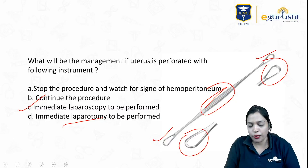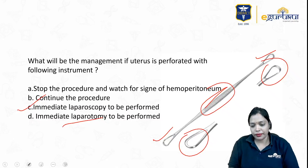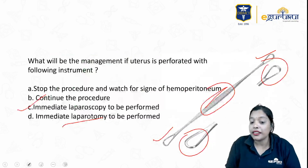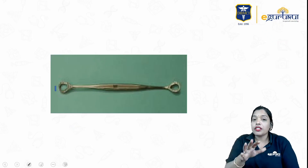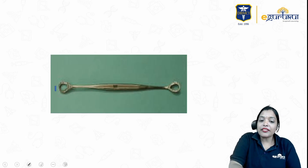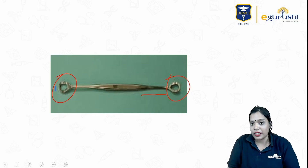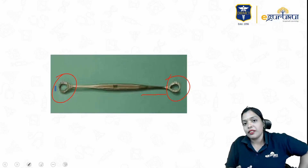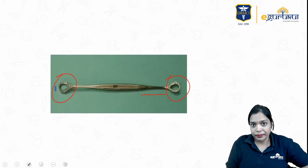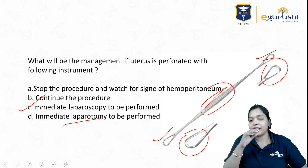You can always choose laparoscopy over laparotomy; go for laparotomy only when the patient is hemodynamically unstable. Many students confuse the uterine curette with the anterior vaginal wall retractor. The anterior vaginal wall retractor is angulated and has serrations at the end to fit the vaginal rugosities, whereas the uterine curette has serrations in the center and is not angulated.